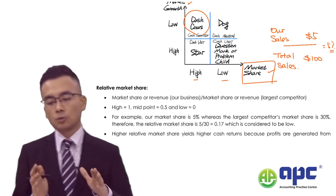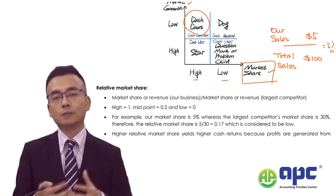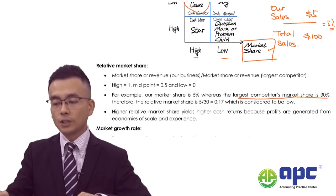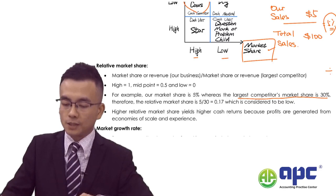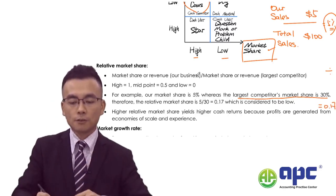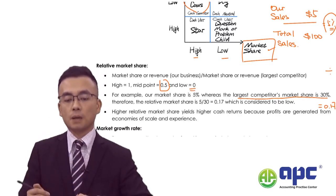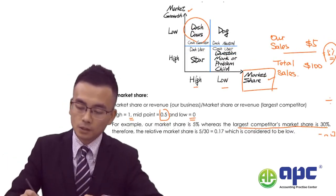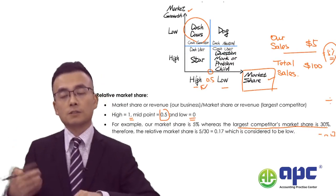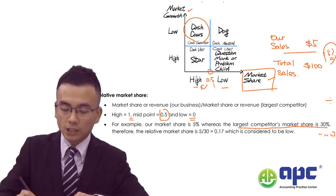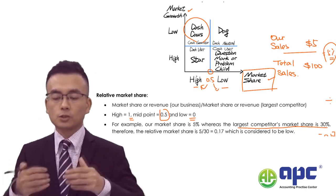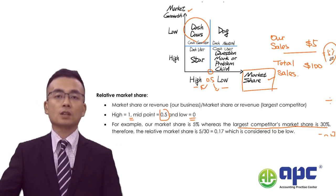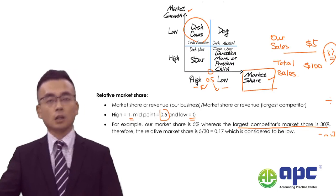I would recommend using relative market share, especially if given the largest competitor's market share. For example, if the largest competitor has 30% and you have 5%, divide 5% by 30% to get 0.17. The midpoint is 0.5 — below 0.5 is low relative market share, above 0.5 is relatively high. If you're not given the largest competitor's share, you can use subjective assessment to judge whether it's high or low, and this is absolutely fine.